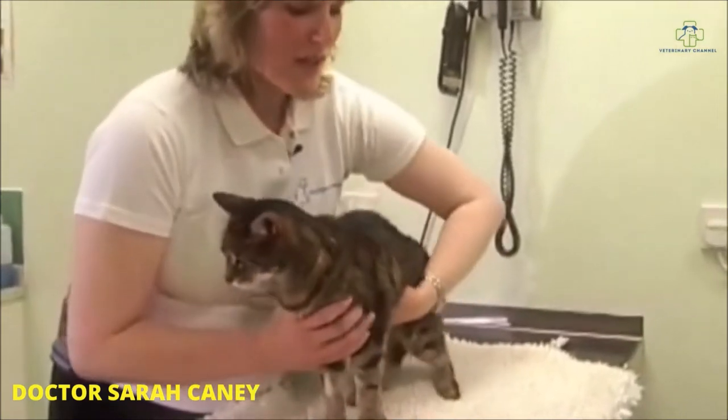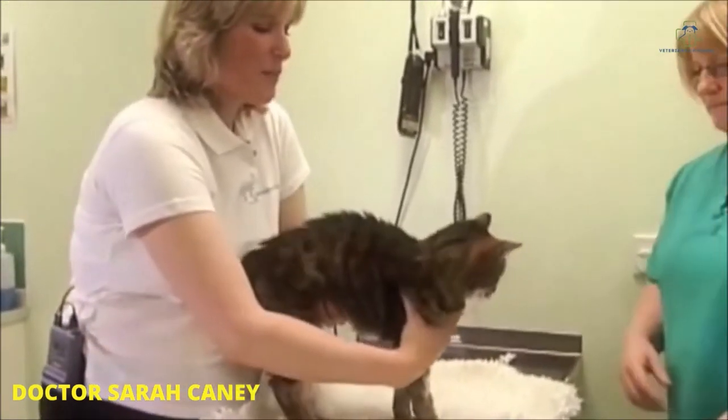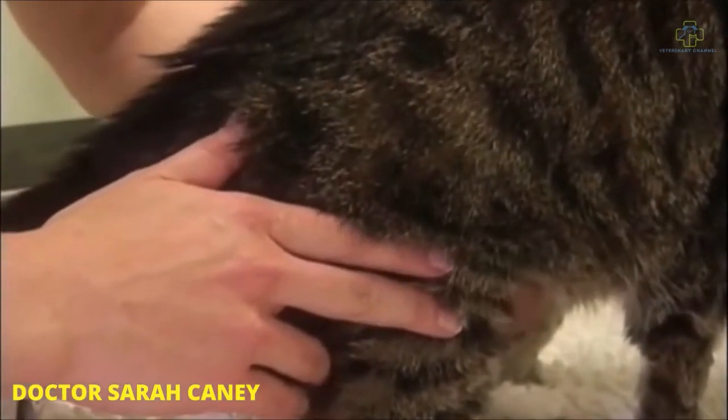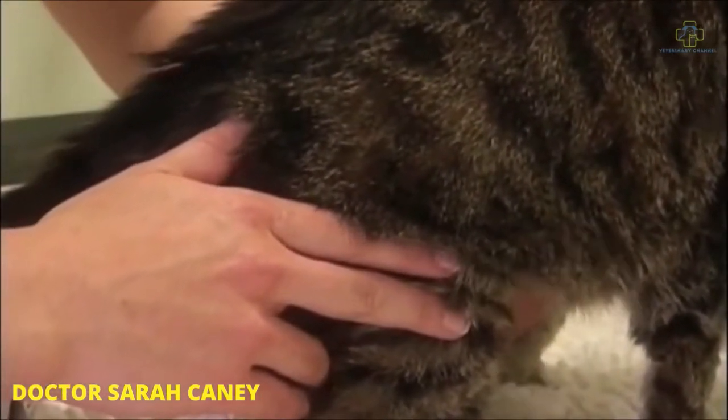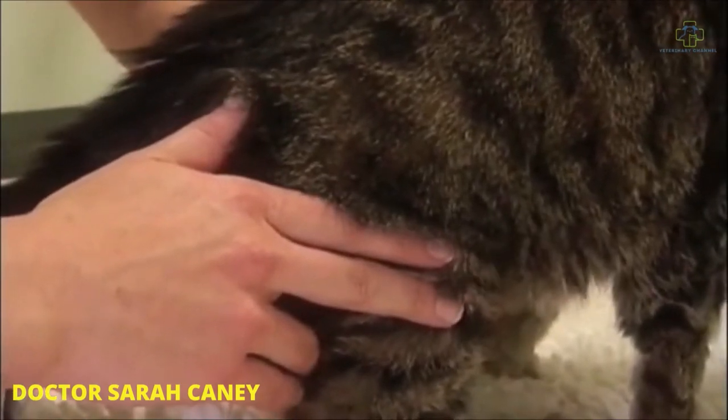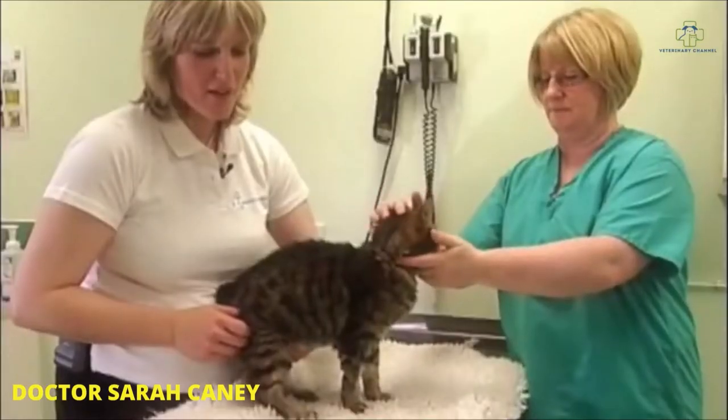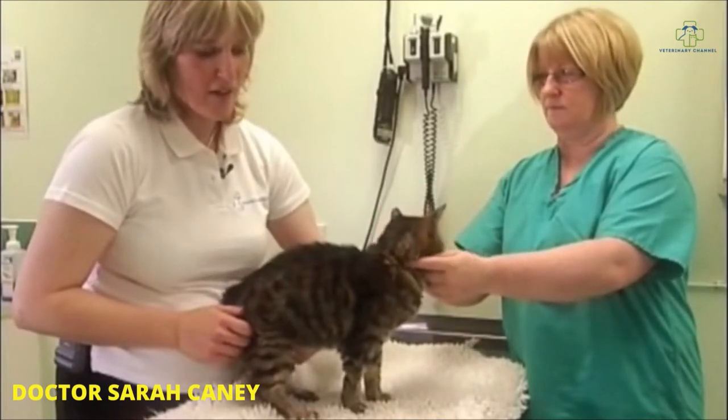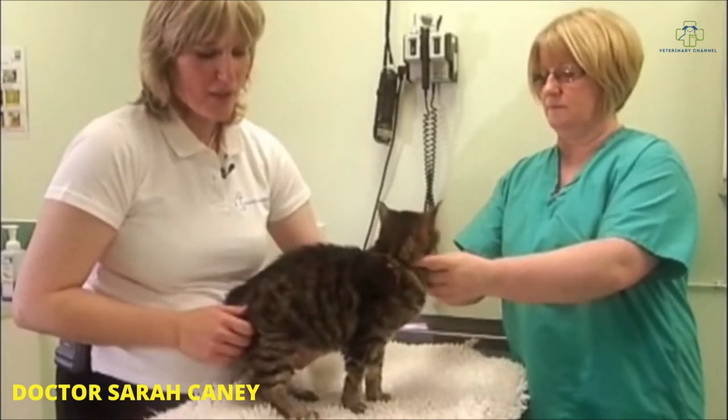The first step is to make sure that you can palpate the cat's bladder. If you can't palpate the cat's bladder, then you shouldn't stick a needle into the abdomen. If you find, either because the cat's very fat or because the bladder is very small, that you can't, then an alternative is to use ultrasound to guide you in placement of your needle.